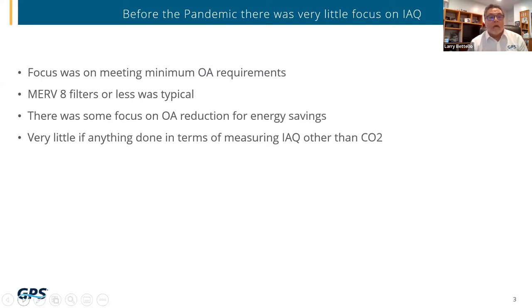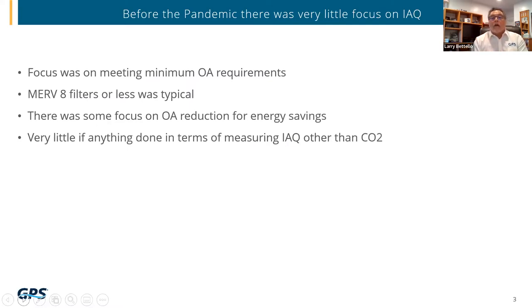All people looked at was meeting minimum outside air requirements and maybe monitoring CO2. Typical filters in buildings were MERV 8 or less. Some cities like New York had strict regulations on lowering carbon footprints, so some were starting to look at outside air reduction, but very little was done to measure indoor air quality beyond CO2.